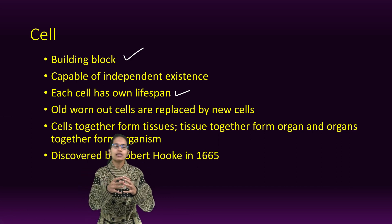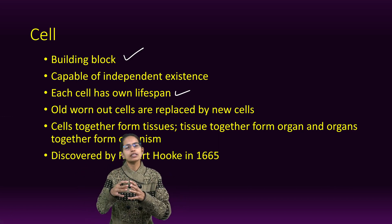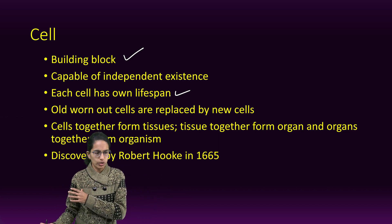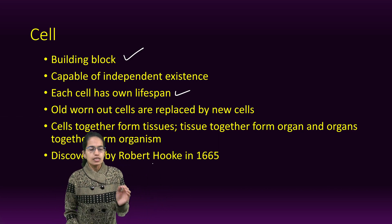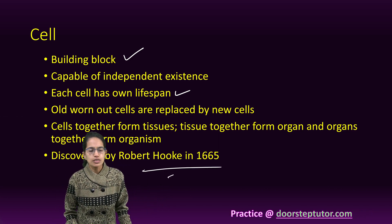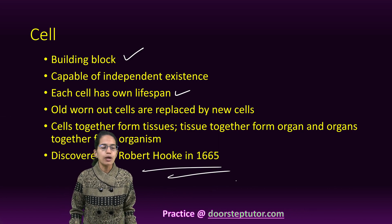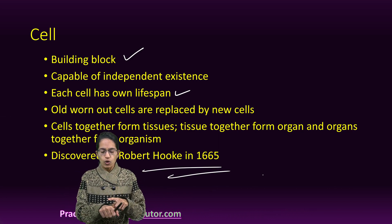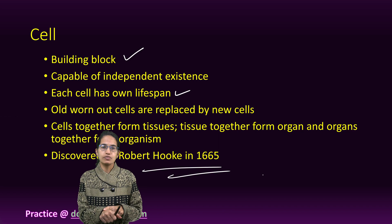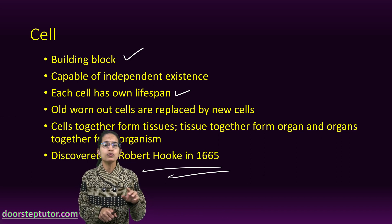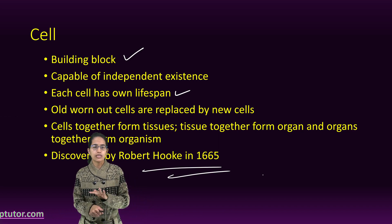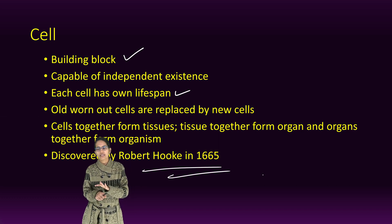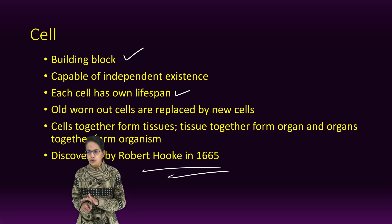Cells come together to form tissues. Tissues come together to form organs. Organs come together to form an organism. This concept was first discovered in 1665 by Robert Hooke. And importantly, on dead skin, we see that dead skin removes and we have new skin — meaning the old worn-out cells are replaced by new cells.